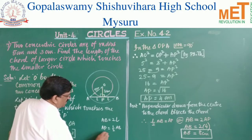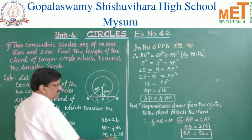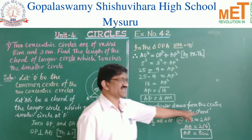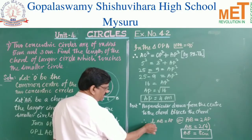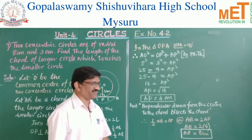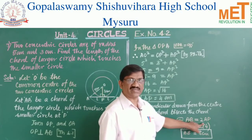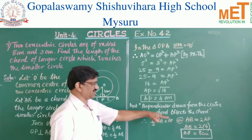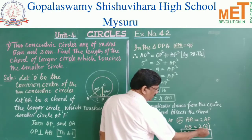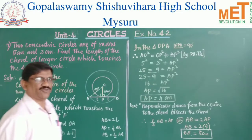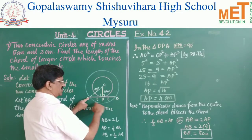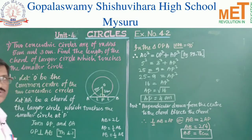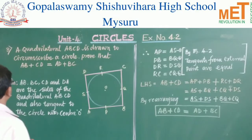Since the perpendicular from the center bisects the chord, half of AB equals AP, so AB equals twice AP. Substituting: AB = 2 × 4 = 8 centimeters. Therefore chord AB equals 8 centimeters.